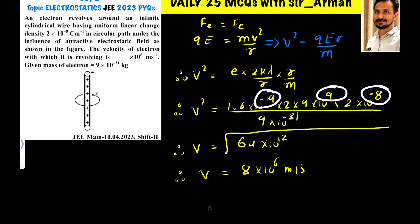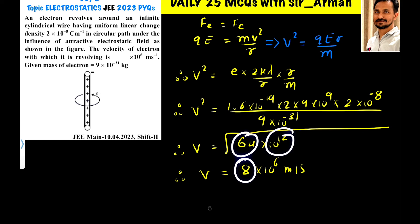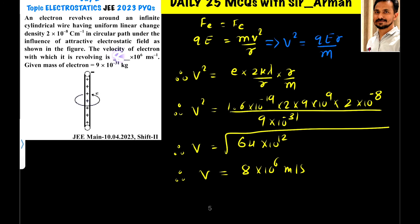Adding all the powers of 10 gives 6.4×10¹³. Shifting the decimal, this becomes 64×10¹². Since it is v², taking the square root on both sides gives v = √(64×10¹²). The square root of 64 is 8 and √(10¹²) = 10⁶, so the answer is v = 8×10⁶ meter per second.